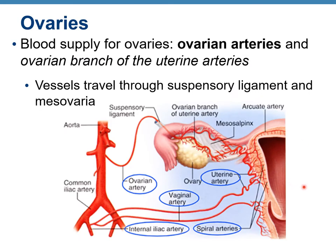Blood supply for the ovaries comes from ovarian arteries and the ovarian branch of the uterine arteries. Vessels travel through the suspensory ligament and mesovaria. The ovarian artery is a branch from the aorta, and we have right and left ovarian arteries. From the internal iliac artery we have the uterine artery, which also supplies the ovary with blood, and the vaginal artery, which supplies the vagina.